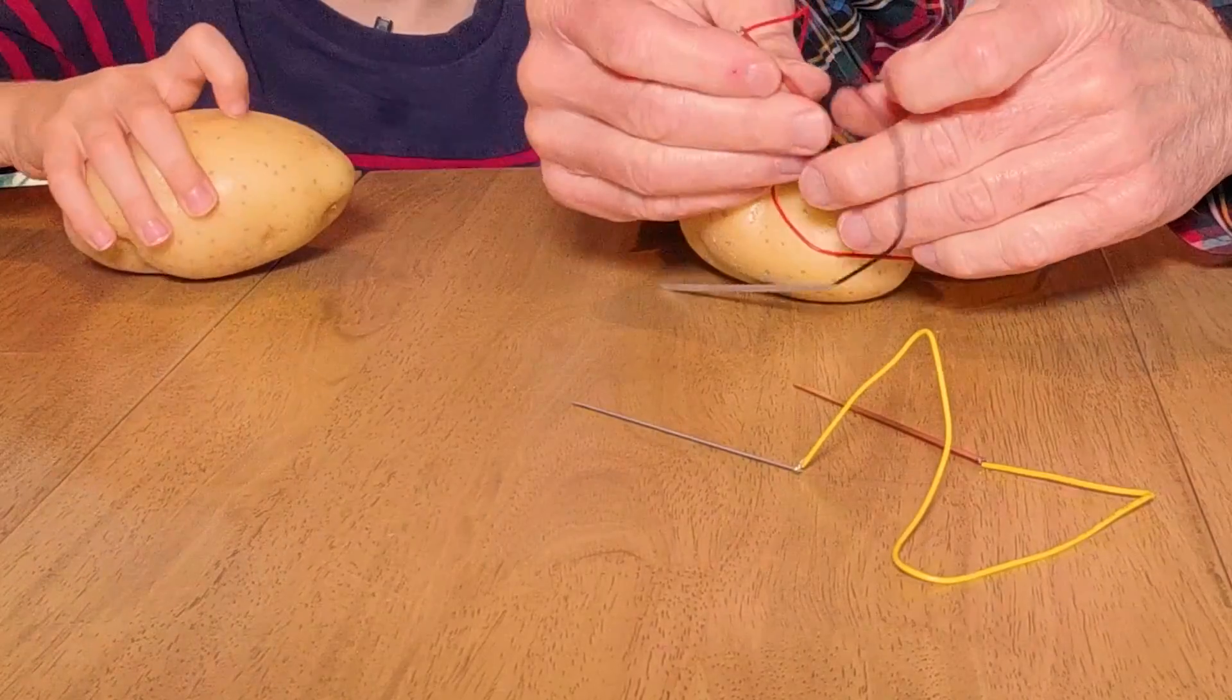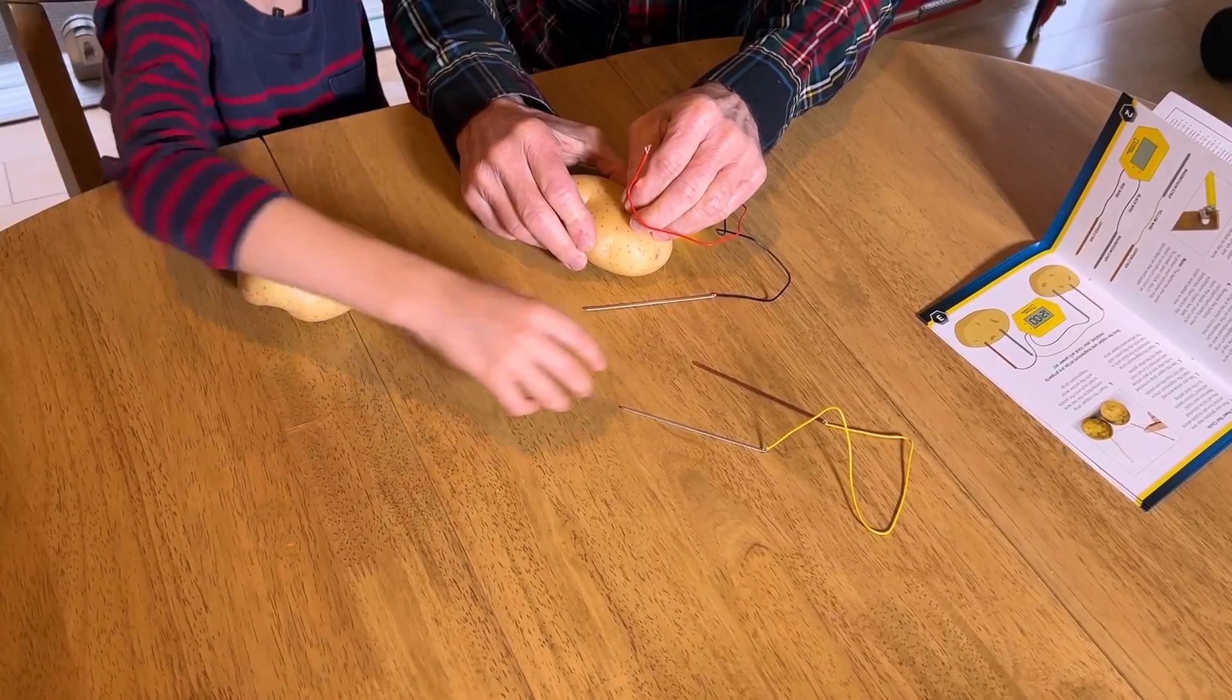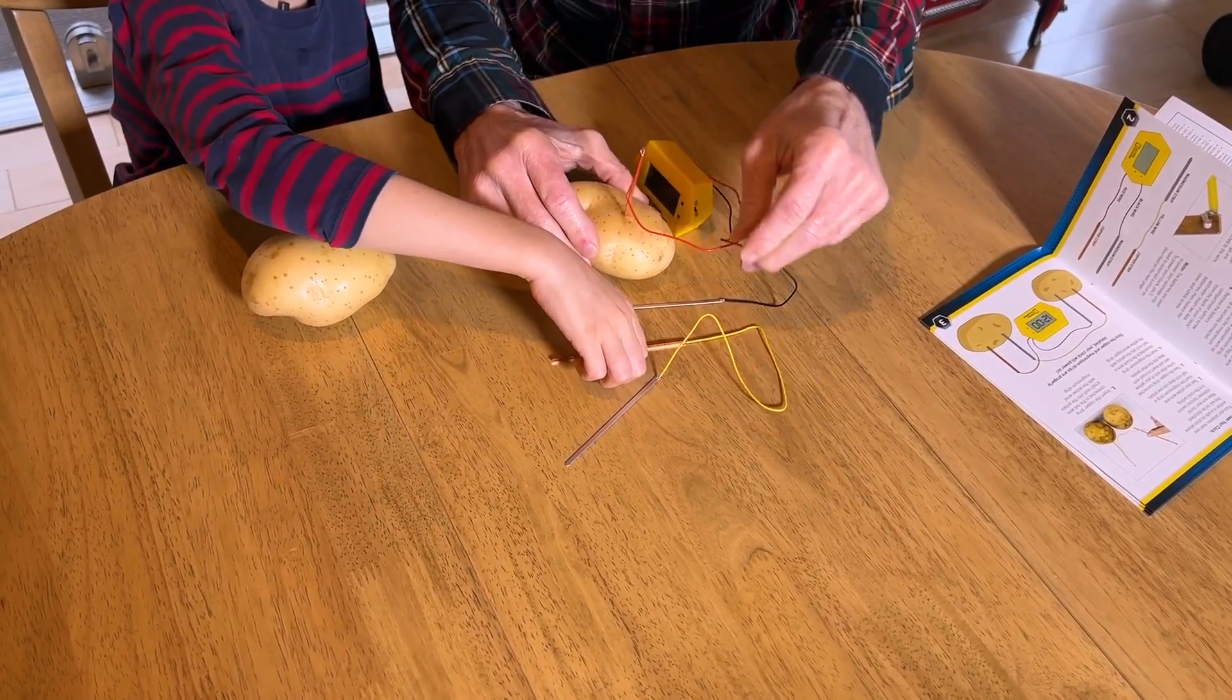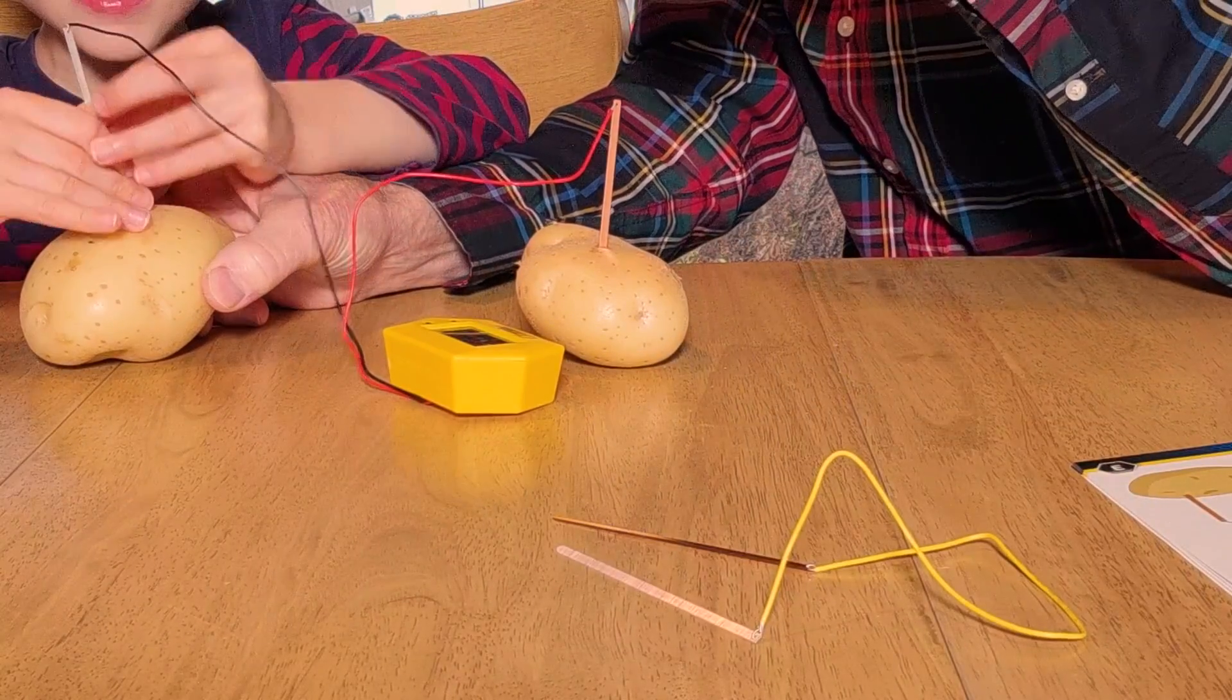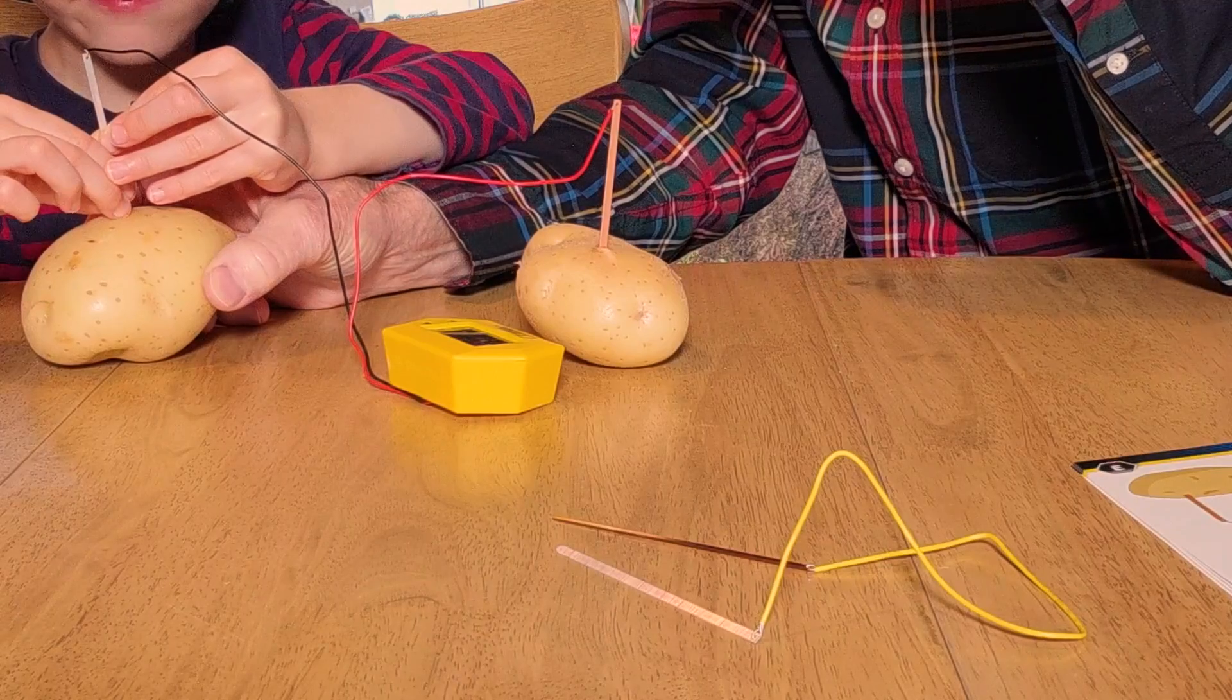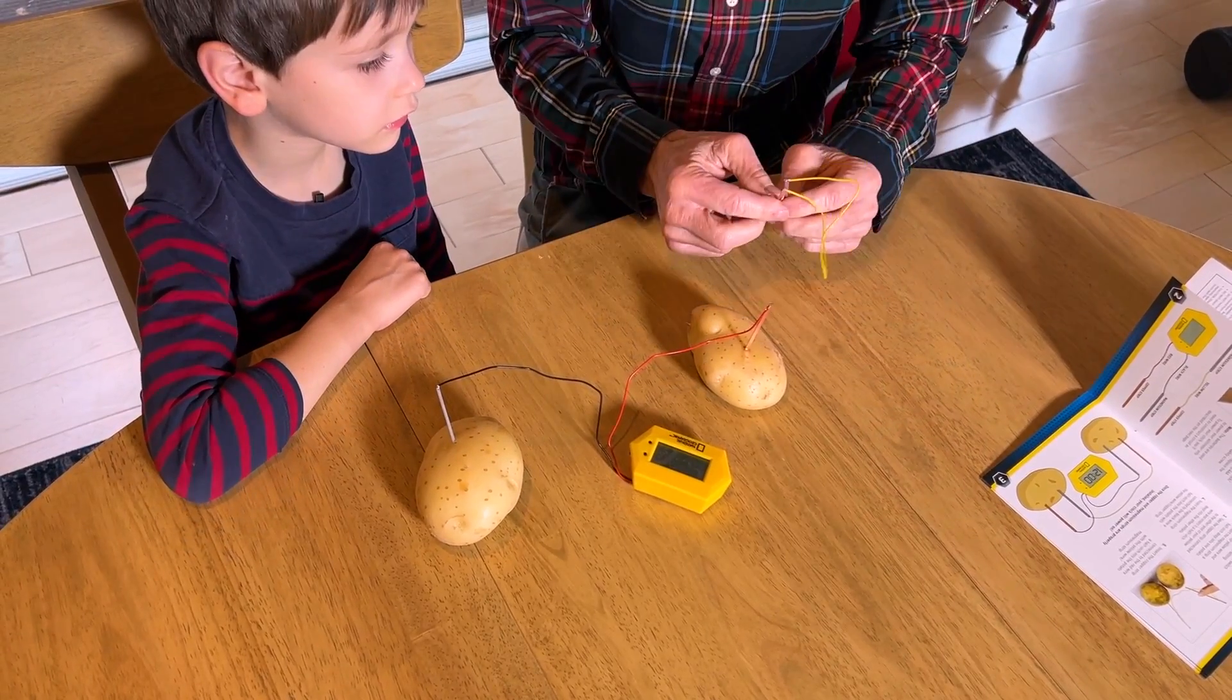So what we're going to do is we're going to put the copper electrode into the potato, so we put a copper in one. Now we need to put a zinc in the other one. Push it down in there. Good.